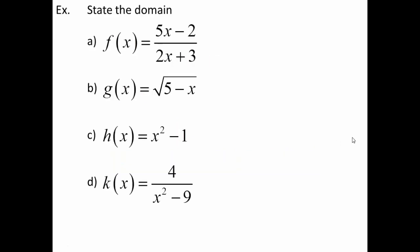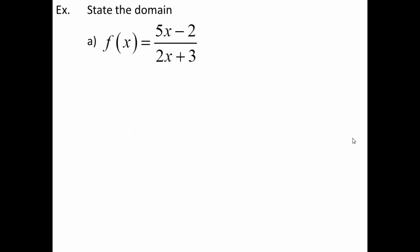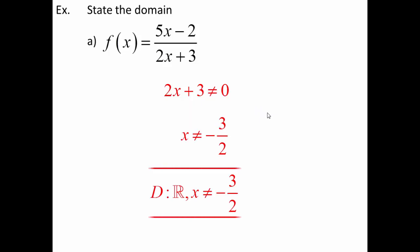Let's look at some examples. Looking at the first one: we're looking at a rational function. The rule for rational functions is that the denominator cannot be zero. I don't care about the top — I'm just going to look at 2x plus 3, say it can't be zero, and solve for x. I get negative 3 halves, which means the domain is all real numbers except x cannot equal negative 3 halves.